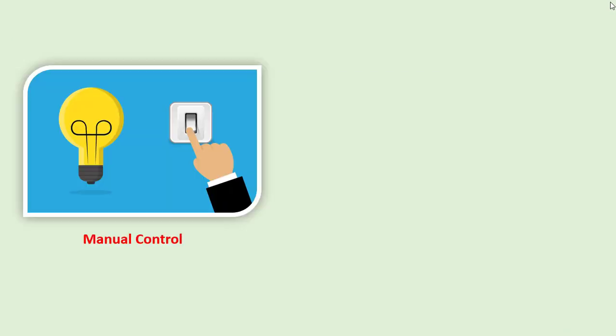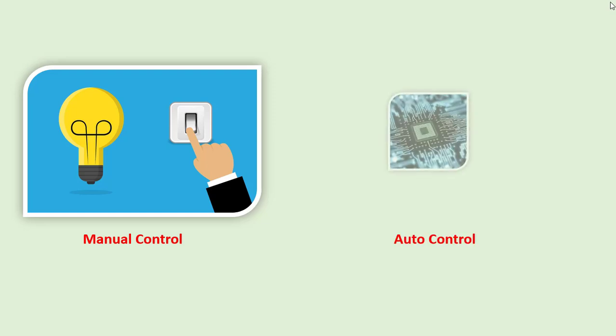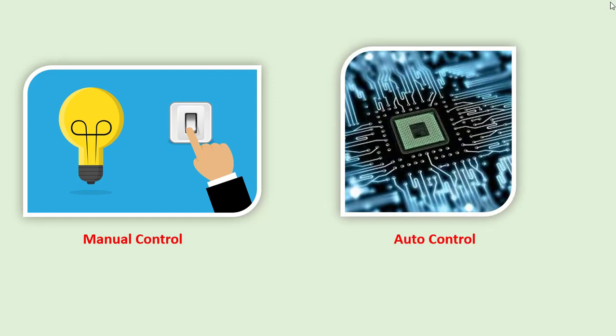A control system can either be manual control or automatic control. An example of manual control is turning on and off a light or a fan inside your room, while automatic controls depend on technology to perform their actions.